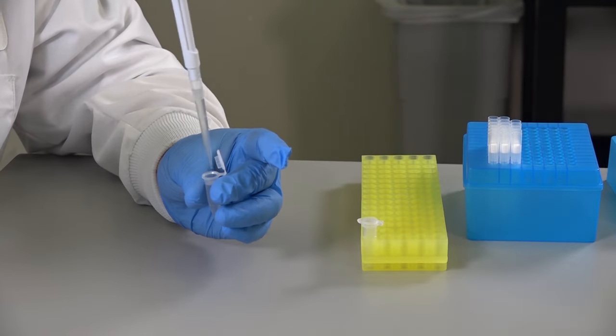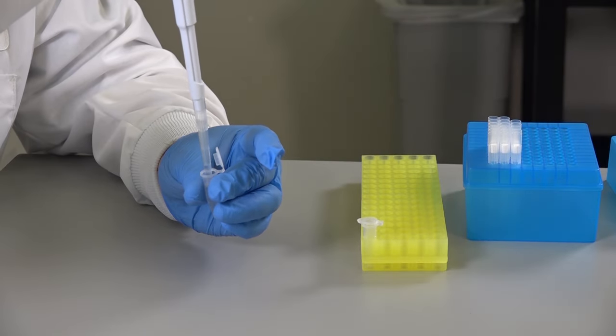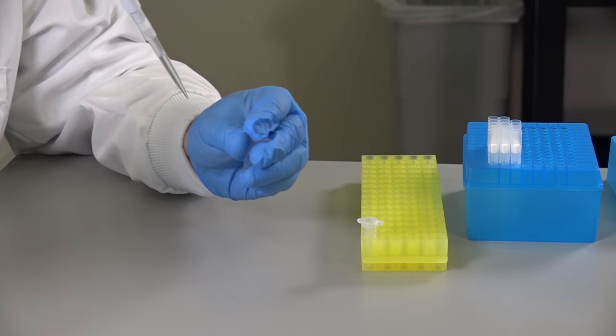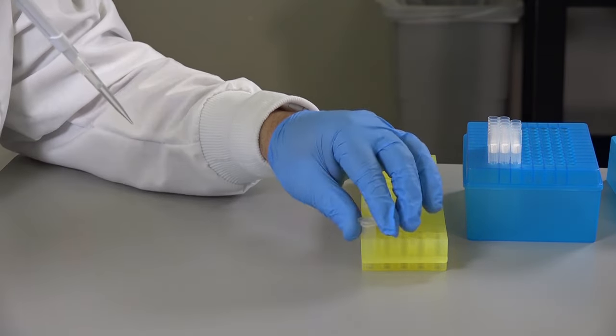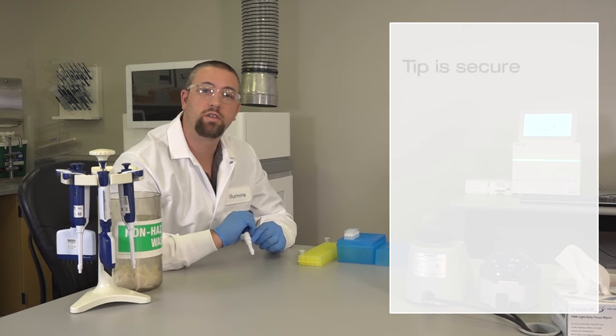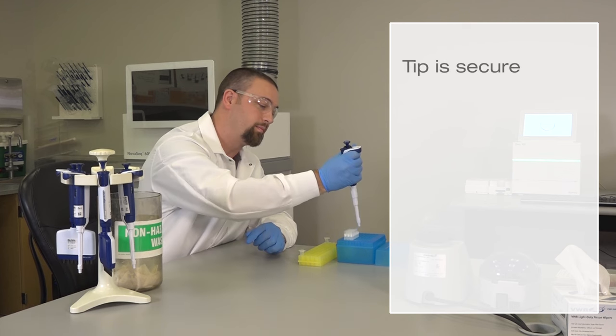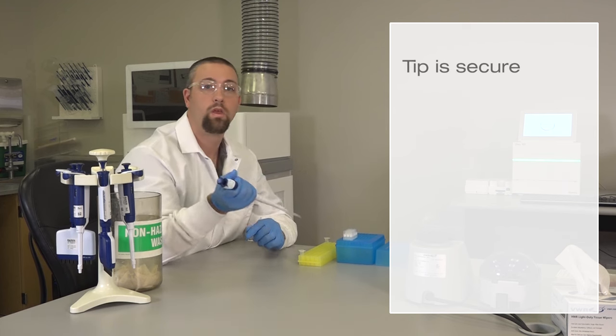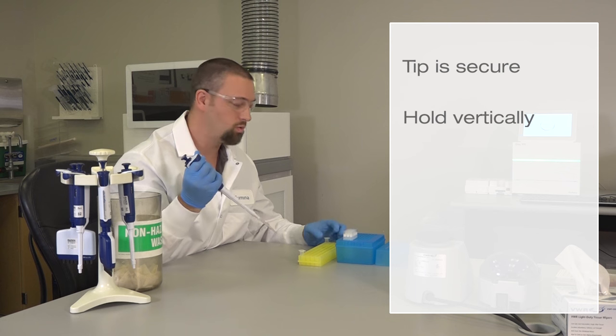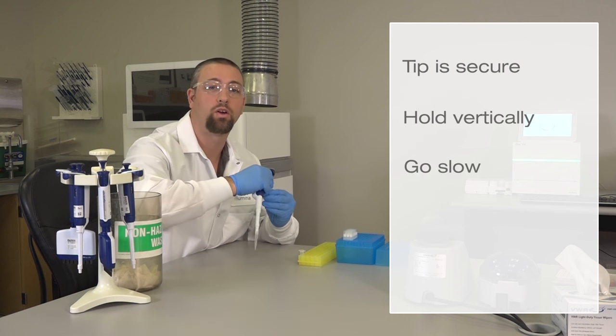It's often the simplest details that have the biggest impact, and that's definitely the case with pipetting. To avoid potential contamination while pipetting, make sure the tip is securely seated on the pipetter. Hold the pipetter vertically and go slow. Make sure you have aspirated the correct volume.